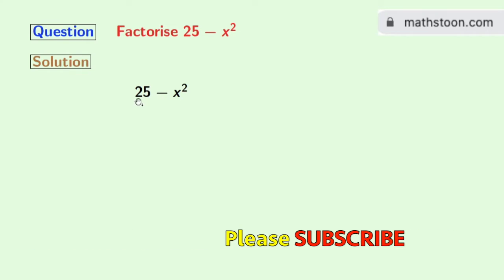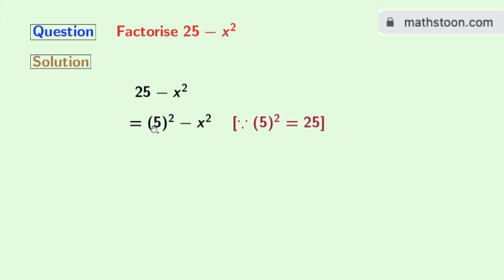Our given expression is 25 minus x squared. Now we will rewrite this expression as 5 whole square minus x squared. We all know that 5 whole square is 25. Now look that this expression is in the form of a squared minus b squared, where a is 5 and b is x. So we will apply the formula of a squared minus b squared.